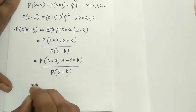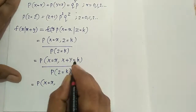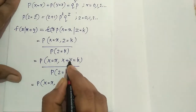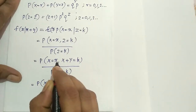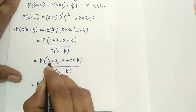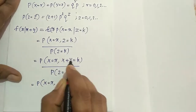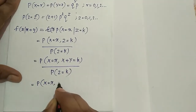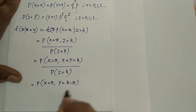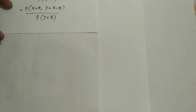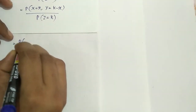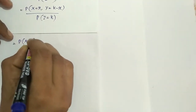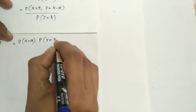Now, this is equal to probability X equal to x and Y equal to k minus x, divided by probability Z equal to k. Since X and Y are independent, this can be written as the product of two probabilities: probability X equal to x times probability Y equal to k minus x, divided by probability Z equal to k.